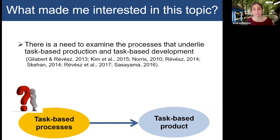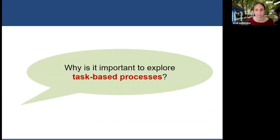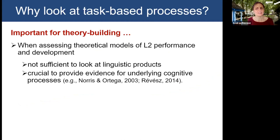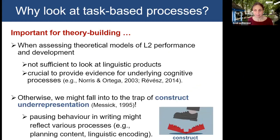More and more researchers, however, realized that in addition to looking at the product of task-based performance, it's also important to examine the processes that underlie task-based production and development. Why is it important to look at task-based cognitive processes? It's important for theory building. When we assess theoretical models of second language performance and development, it's not sufficient to look at linguistic products — it's also crucial to provide evidence for the processes that underlie them. Otherwise we might fall into the trap of construct underrepresentation.